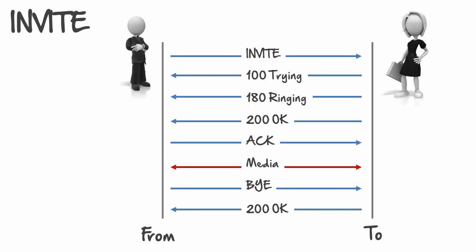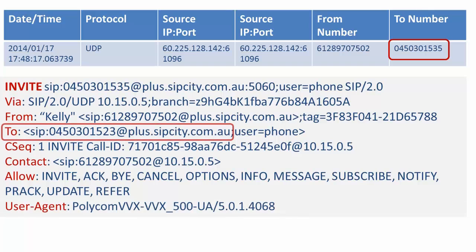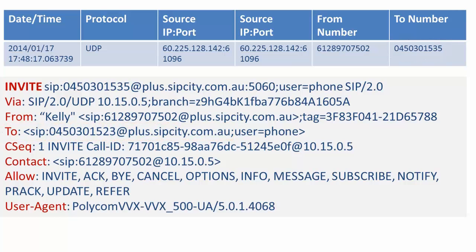The step that trips most people up is the initial invite. Here's the source information — timestamps, ports, FROM and TO. The TO is correctly formatted; we only need the area code. The FROM is important: notice how we are presenting Kelly's name, but using her DID formatted with the full FNN — country, area code, and phone number.